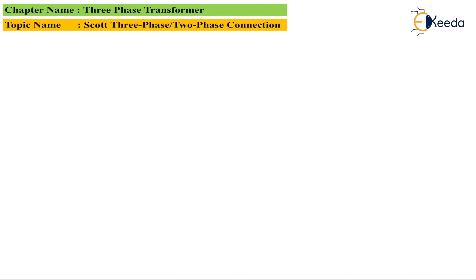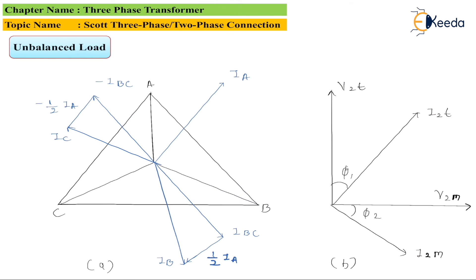Similar calculations can be done for the unbalanced load. The phasor diagram for the unbalanced load shows voltage V2M (secondary winding of the main transformer) lagging voltage V2T (secondary winding of the teaser transformer), with the respective currents of the two transformers shown accordingly. The phase difference between V2T and I2T is different compared to the phase difference between V2M and I2M. In this way, we have studied the Scott connection of the transformer.